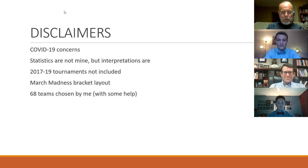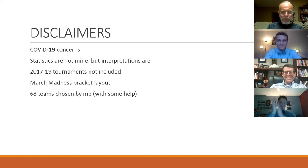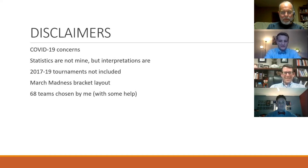The 68 teams were chosen by me with help from ESPN's bubble watch and Joe Lunardi, who has predicted all 68 teams correctly multiple times, so I felt comfortable using his projections. I also included Alabama in the statistics to account for teams at the bubble.